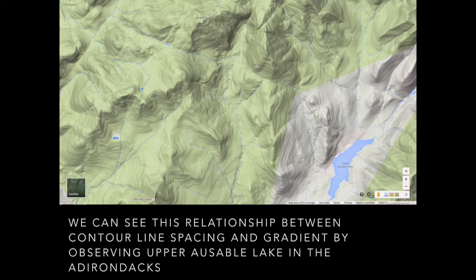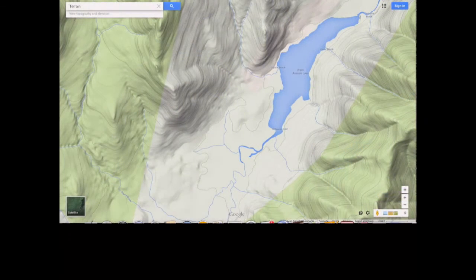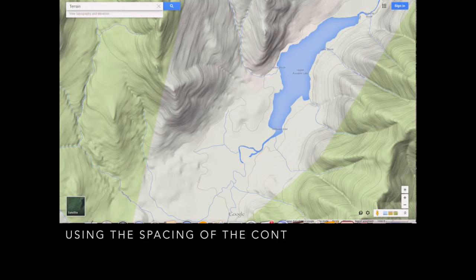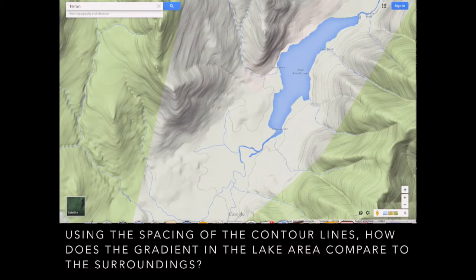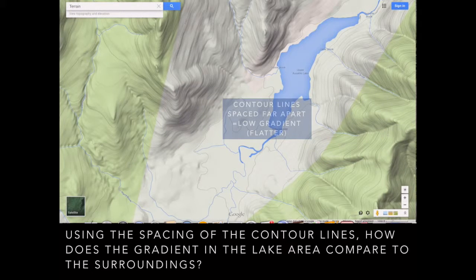Now we're going to look at another spot in the Adirondacks just southeast of Mount Marcy — Upper Ausable Lake — to see the relationship between contour line spacing and gradient. Using the spacing of the contour lines, we can compare the gradient in the lake area to its surroundings. The contour lines are spaced far apart in the lake area, which means low gradient, which means flatter.